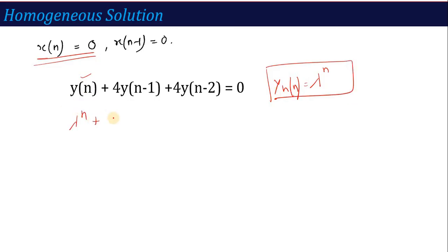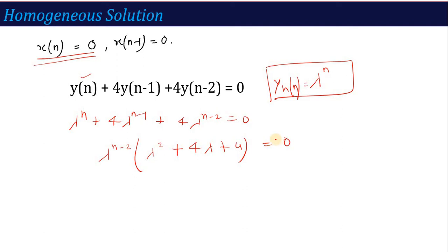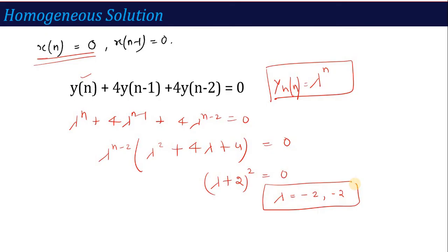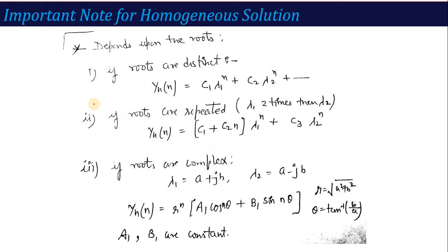Substituting y[n] = λⁿ into the equation gives λⁿ + 4λⁿ⁻¹ + 4λⁿ⁻² = 0. Since λⁿ⁻² ≠ 0, we factor to get (λ + 2)² = 0, giving λ = −2 and −2. Both roots are repeated, so we use the repeated-roots form.